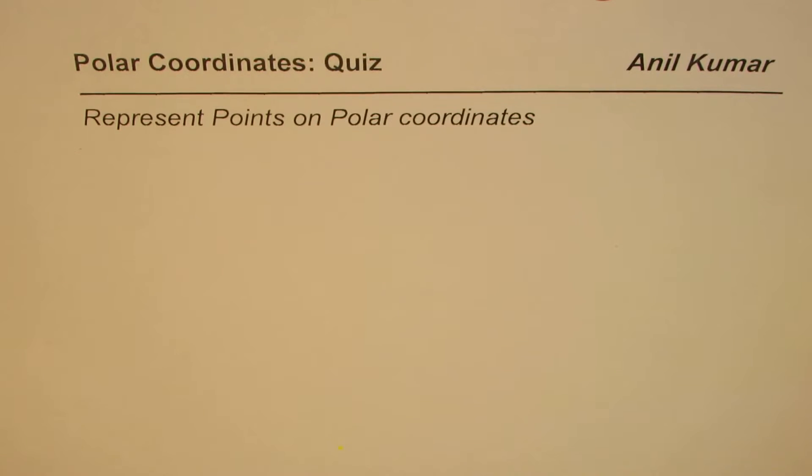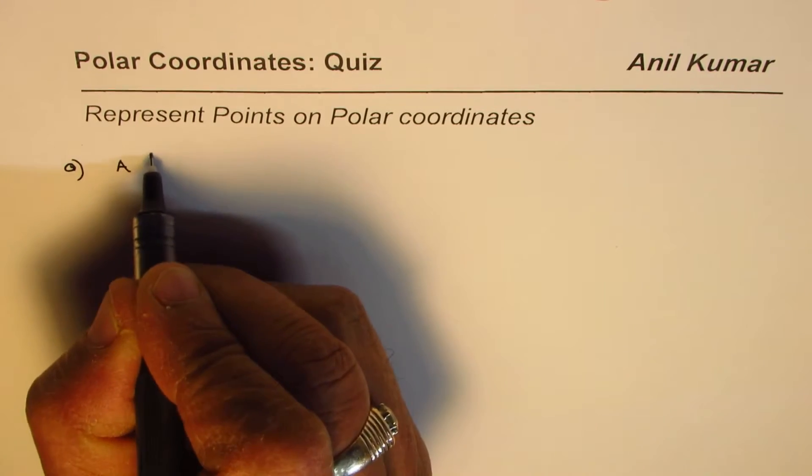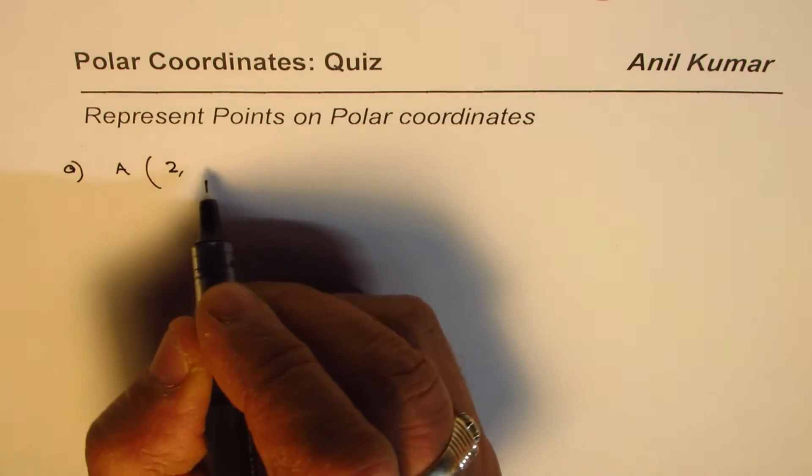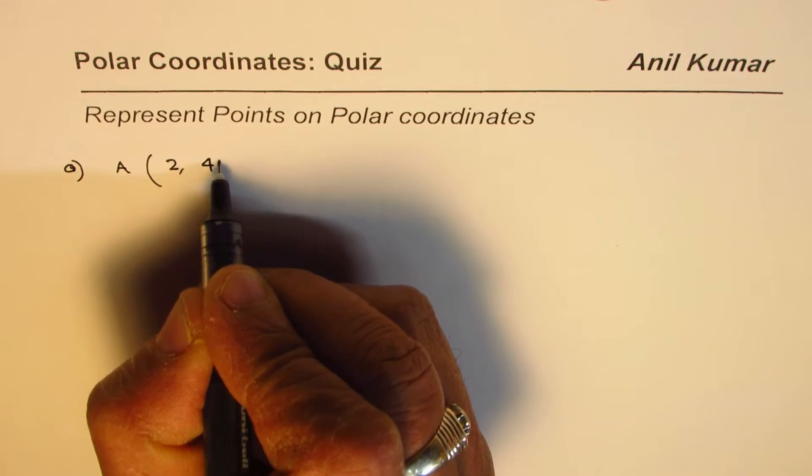I'm Anil Kumar and here is a quiz for you on representing points on polar coordinates. Let me take a few points: point A we'll take it as 2, and let the angle be, let's say, 45 degrees.